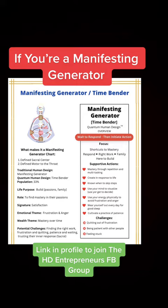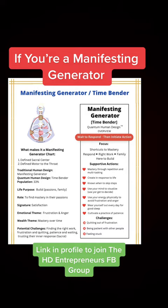The primary focus for manifesting generators is taking shortcuts to mastery, responding to the right work, supporting and being here for family, friends, and community, and focusing on what it is you're here to build. Your supportive actions are developing mastery through repetition and multitasking, creating in response to life, knowing when to skip steps, using your mind to visualize, and then your gut to decide.